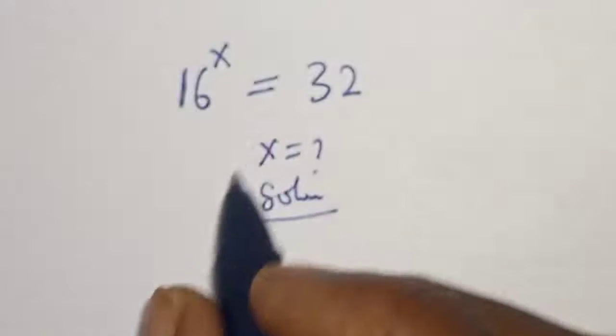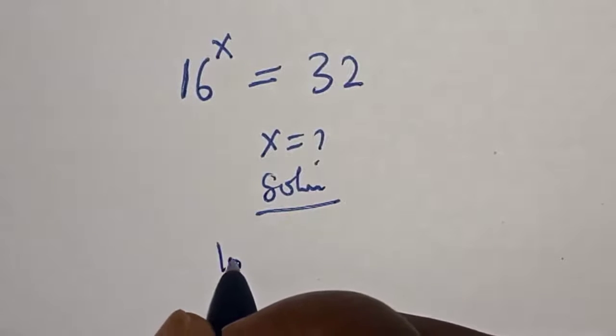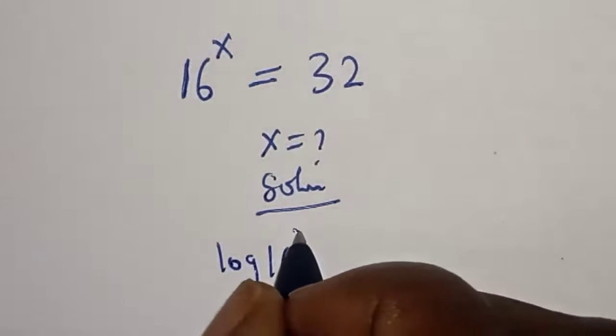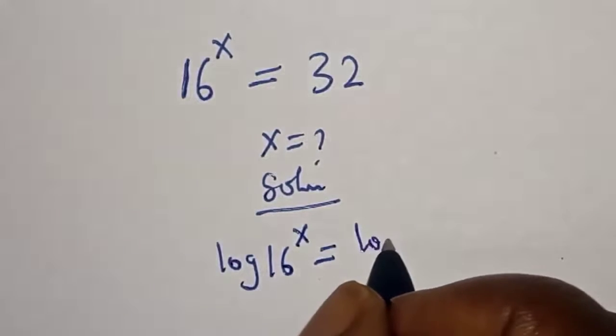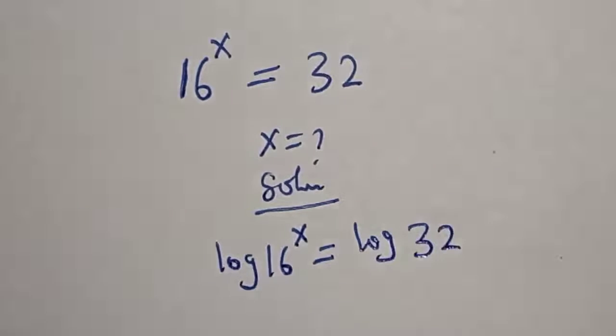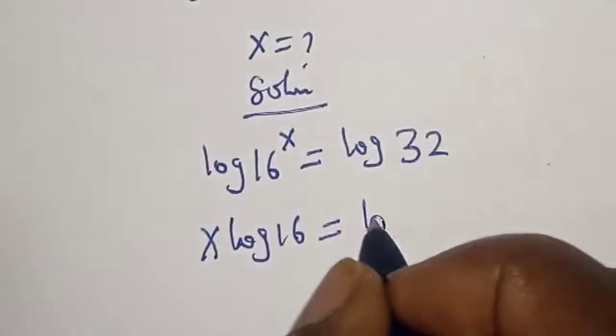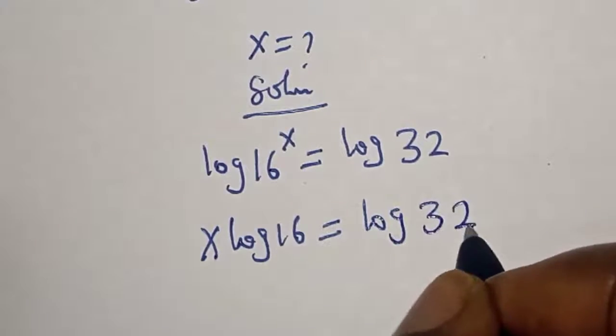Let's take the log of both sides. That is, log 16 raised to power s equals log 32. s log 16 equals log 32.